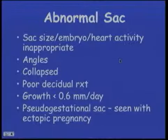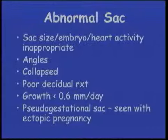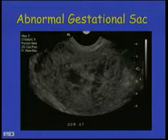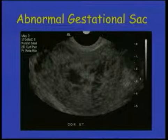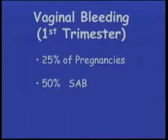Here we can see a very small crown rump length with a tiny yolk sac. An abnormal sac will have sac size, embryo, and cardiac activity inappropriate for gestational age. The sac may be angulated or collapsed, with a poor decidual reaction, and on follow-up studies it will grow less than 0.6 millimeters per day. A pseudo-gestational sac seen with ectopic pregnancies can also mimic a gestational sac. This abnormal gestational sac shows a large yolk sac with irregular, angulated edges. Another image shows multiple lucencies within the sac, which is worrisome for trophoblastic disease. Approximately 25% of pregnancies will have vaginal bleeding, and approximately 50% of those will go on to spontaneously abort.